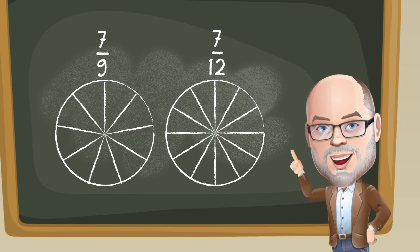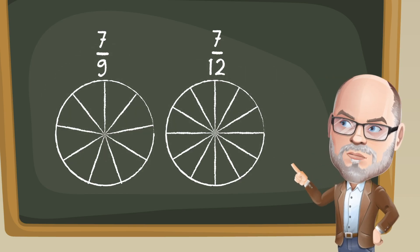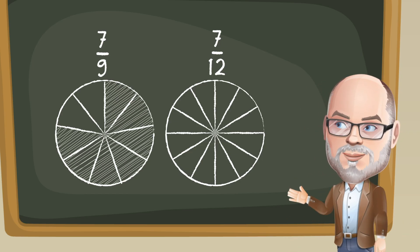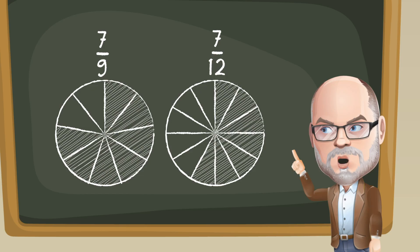So, since we have the same number of pieces, 7, we can simply think about which piece is larger. In other words, 7 pieces that are larger is greater than 7 pieces that are smaller.